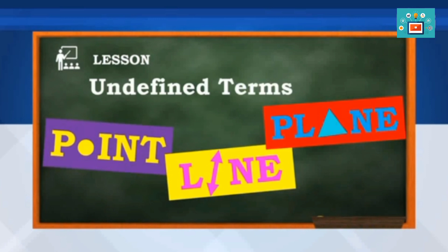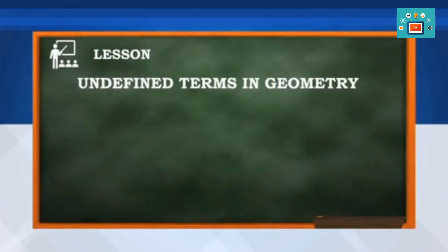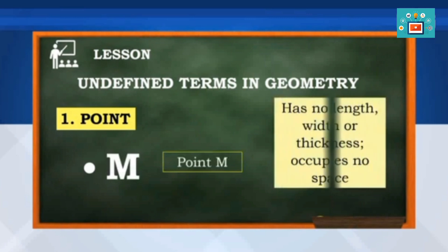The first undefined term in geometry is a point. It is represented as a dot. We can name it using a capital letter and can be read as point M. It has no length, width, or thickness, and it occupies no space.